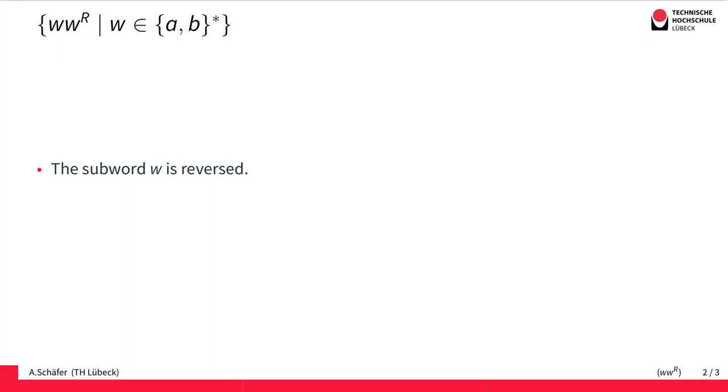Let's have a formal look first. The language we're looking at is this one here. It's the set of all words that are composed of two parts. The first part is W, the second part is the reverse of W, and W consists of A's and B's.